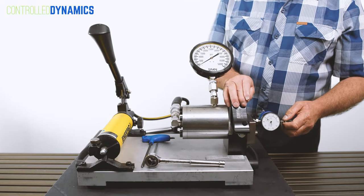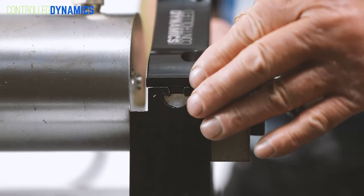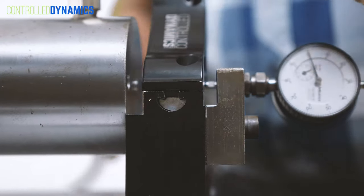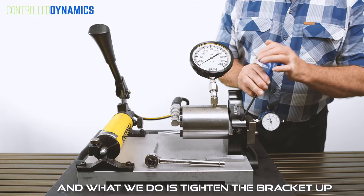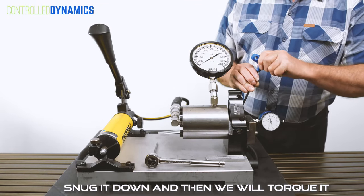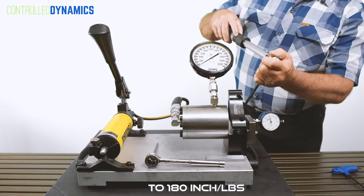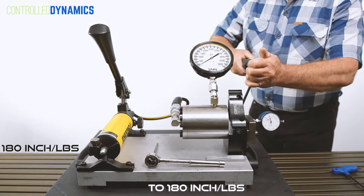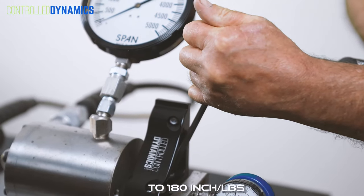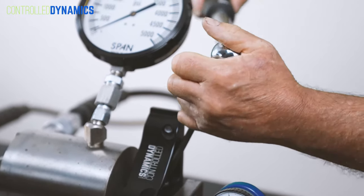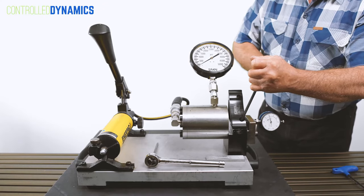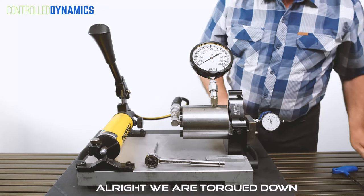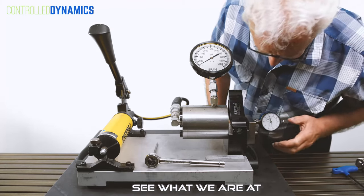I'm going to slide the bracket into position. What we do is tighten the bracket up, snug it down, and then we'll torque it to 180 inch pounds. All right, we're torqued down. Let's see where we're at - we're at zero.